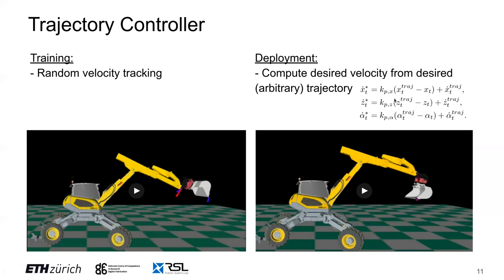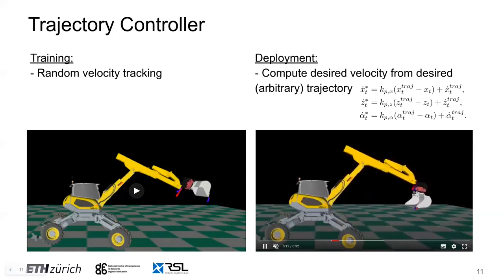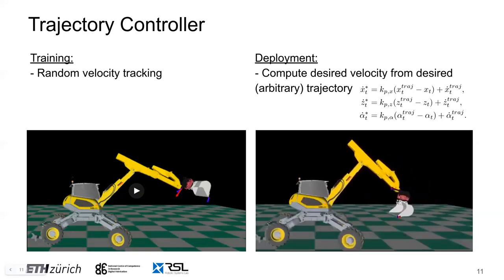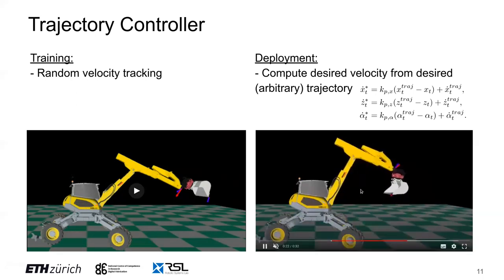During deployment, we use a simple P controller, as shown on the top right of the slide, to compute the desired end-effector velocity given the desired trajectory. For the P gain, we use a value of three for all three dimensions and keep it constant for all experiments shown later. Here you can see how this looks in simulation for tracking a circular trajectory while keeping the orientation of the shovel relative to the cabin constant.